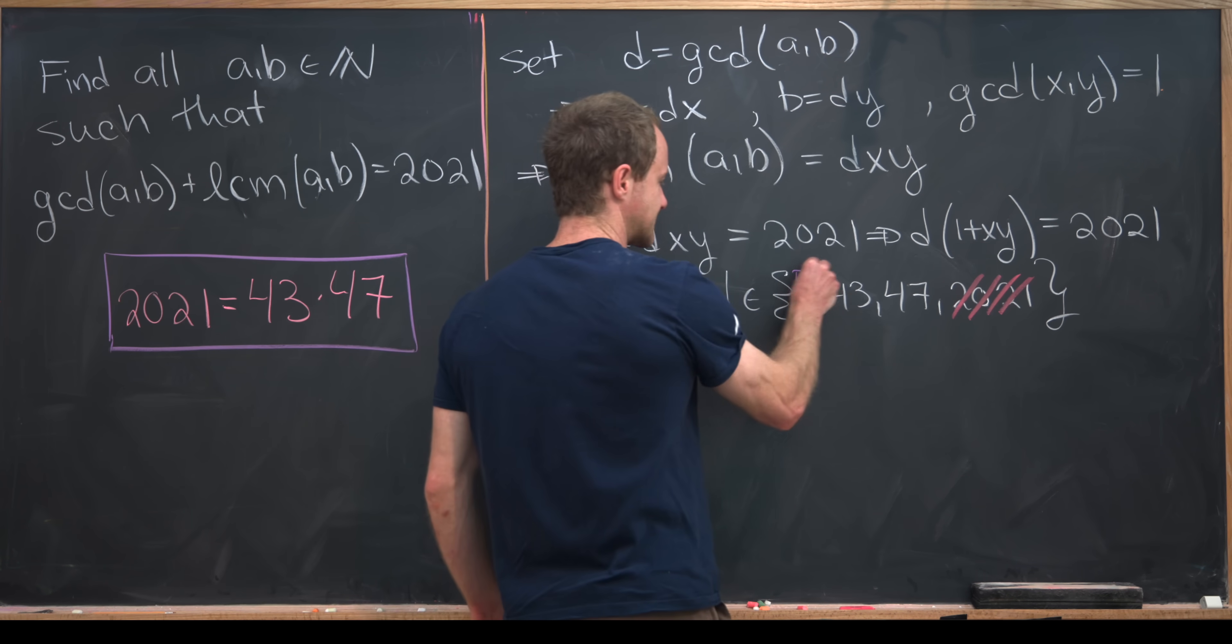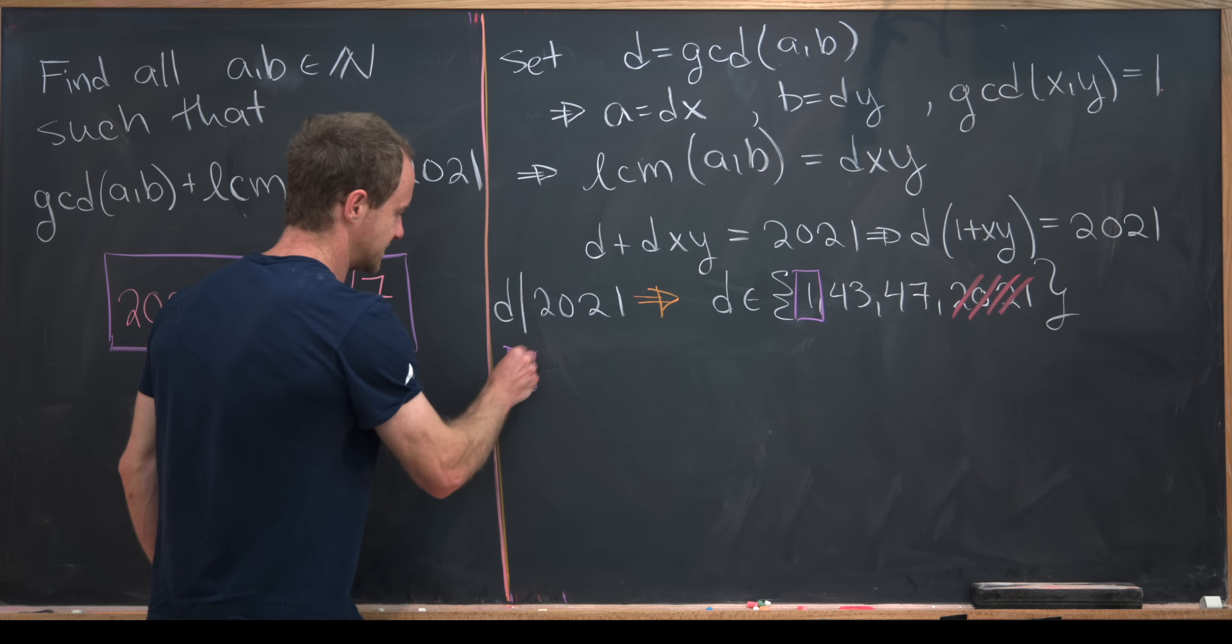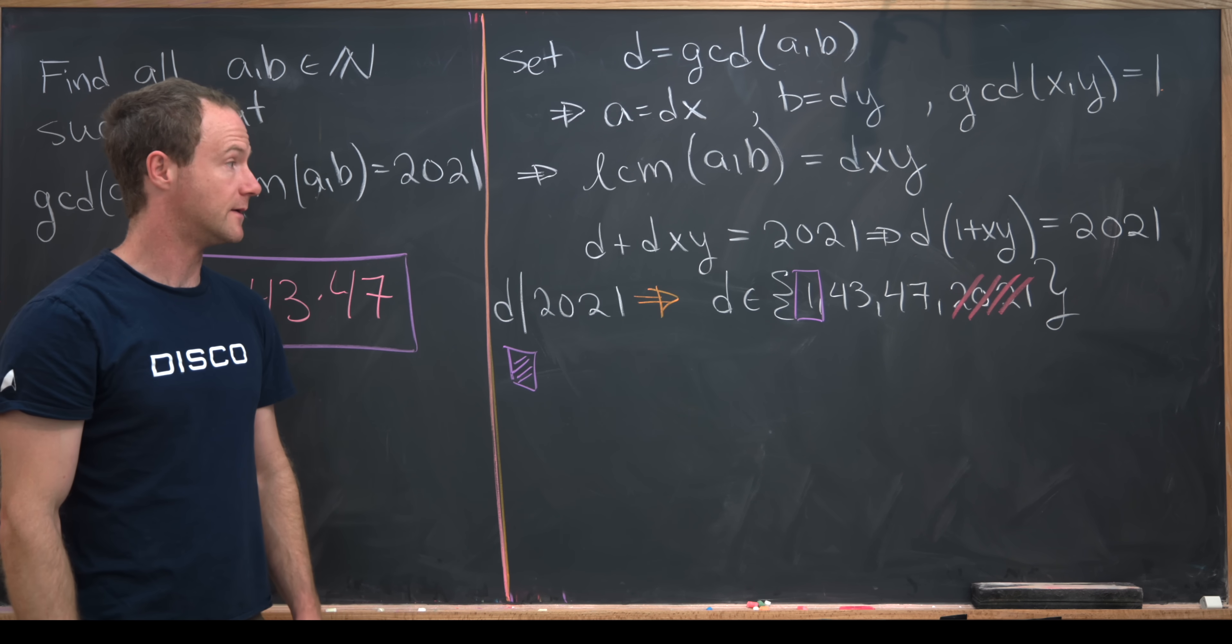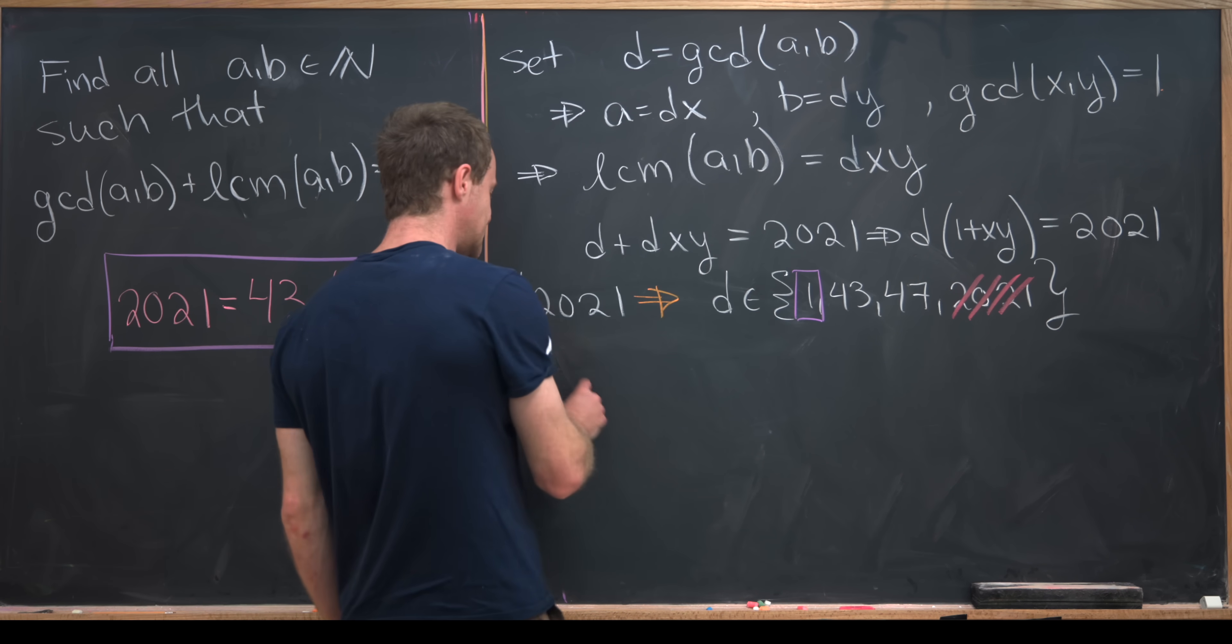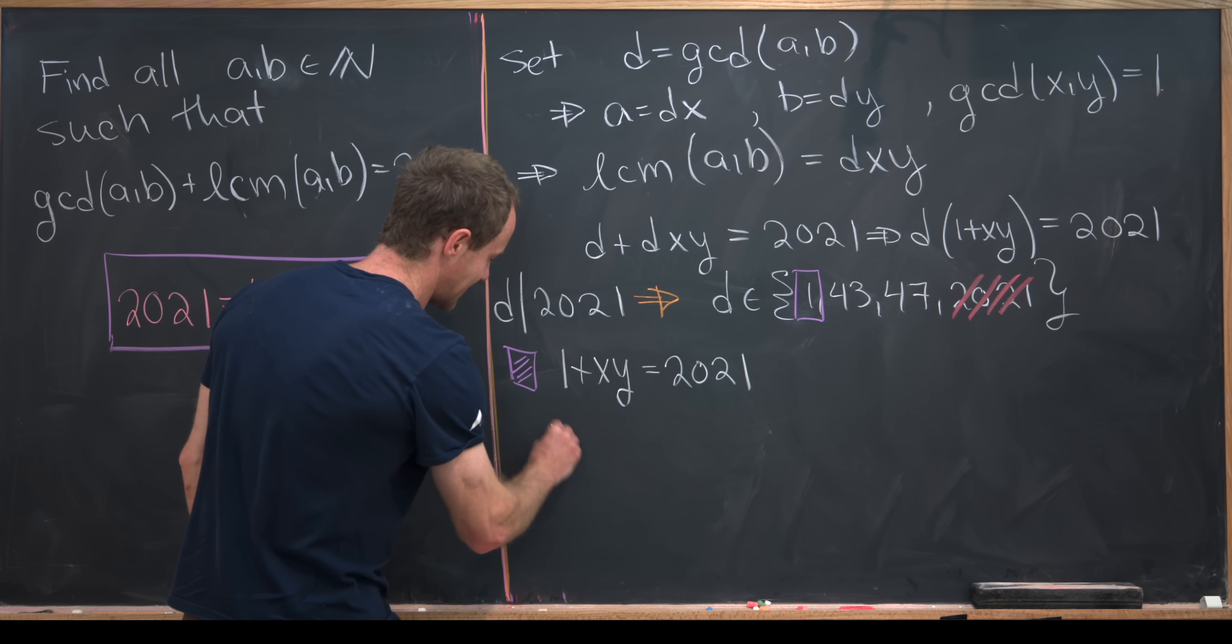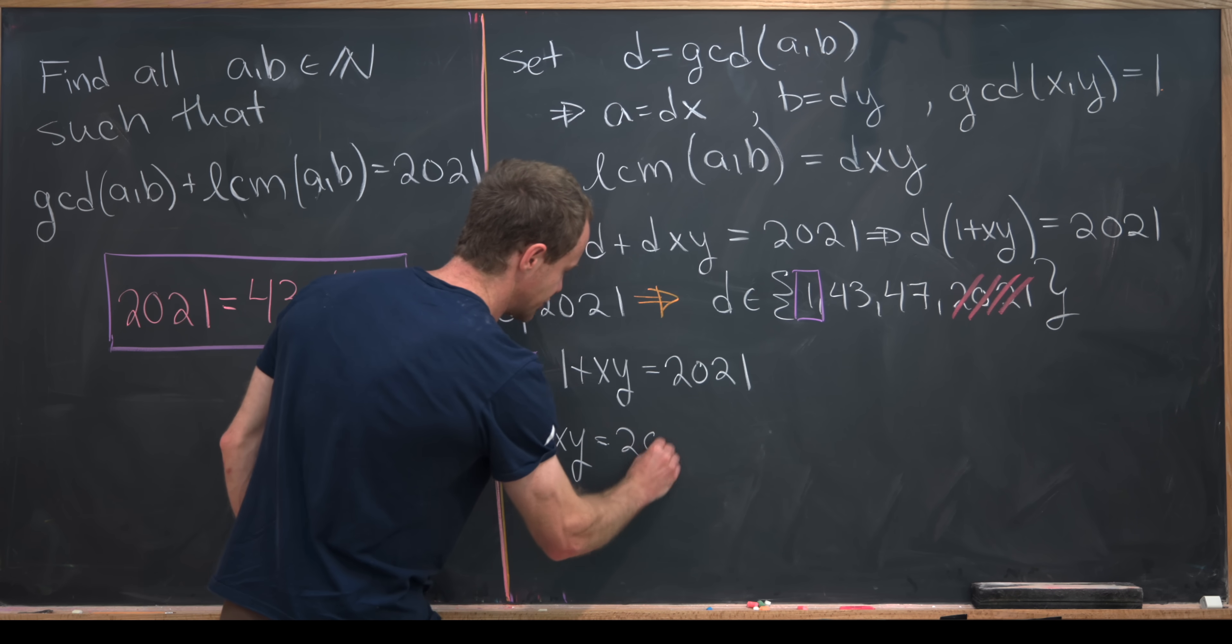Maybe we'll box this one in purple. We'll have our purple case first, and so that's D is equal to 1. But if D is equal to 1, we have 1 plus XY is equal to 2021, which tells us that XY is equal to 2020.